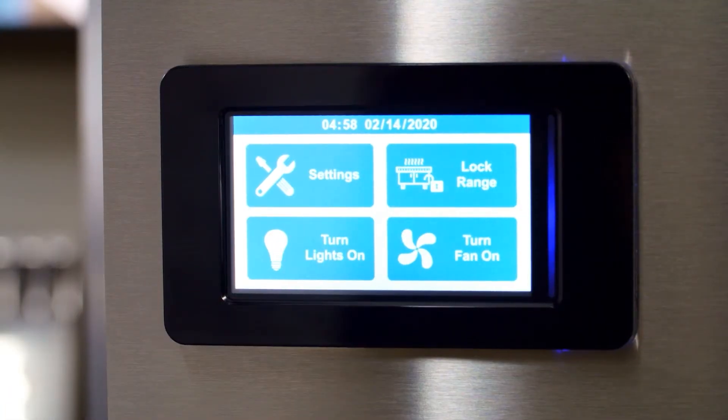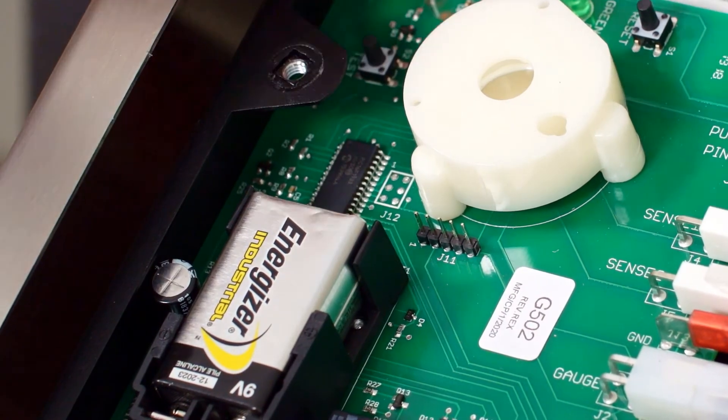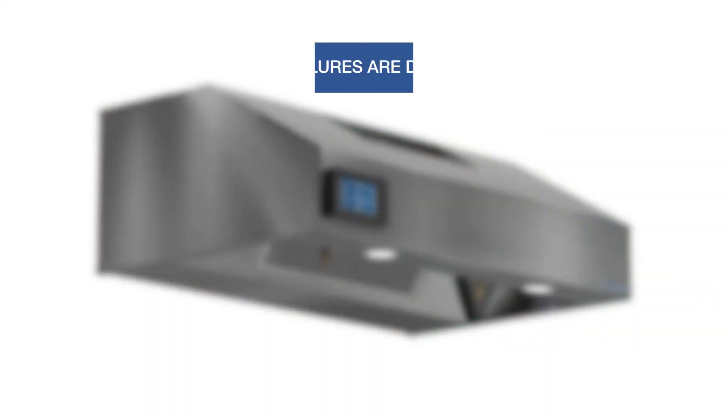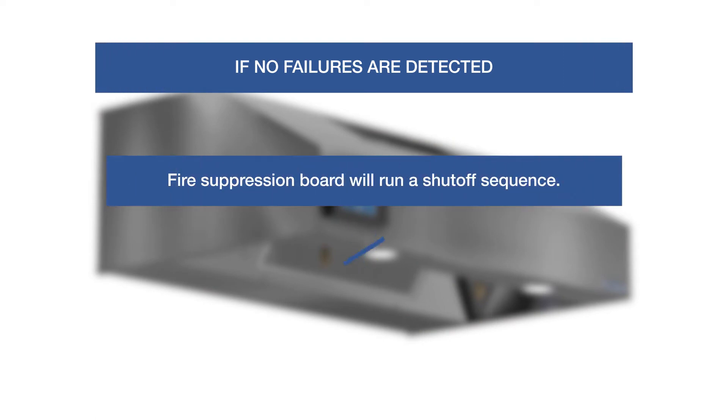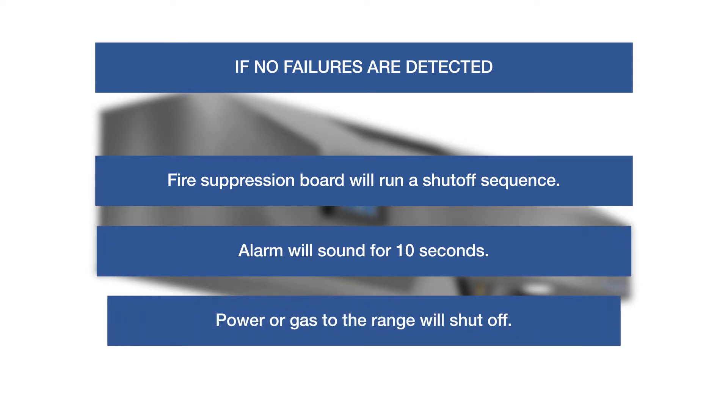For final verification, unlock the range via the touch screen, turn on a range burner, then push and release the test button. If there are no failures detected, the fire suppression board will run a shutoff sequence. The alarm will sound for 10 seconds and shut off power or gas to the range, followed by a chirp every minute. This allows complete system verification, but without the chemical agent release.